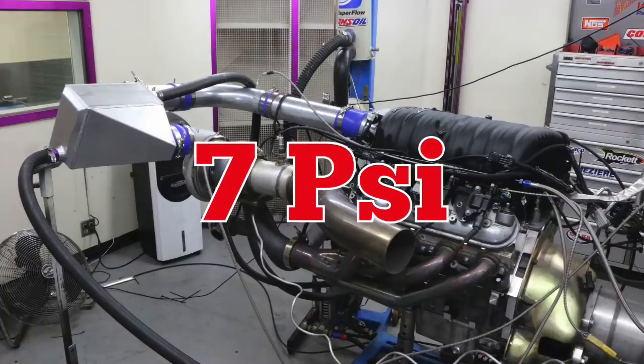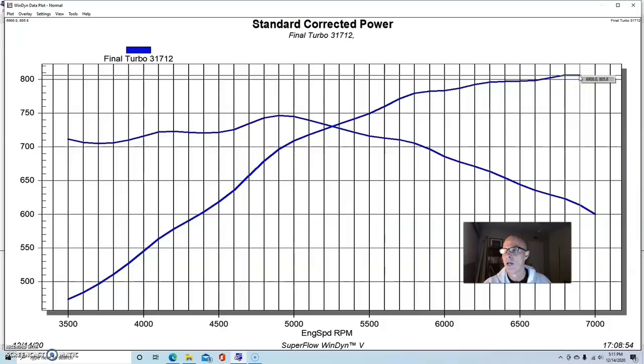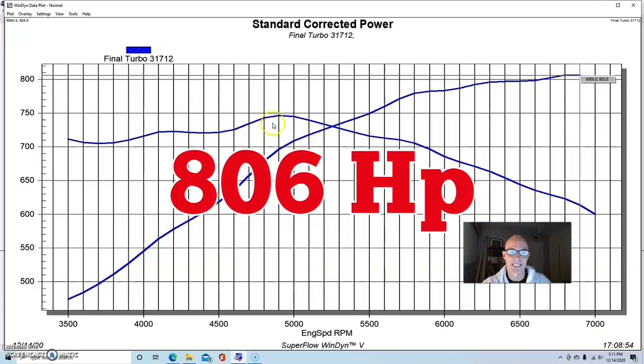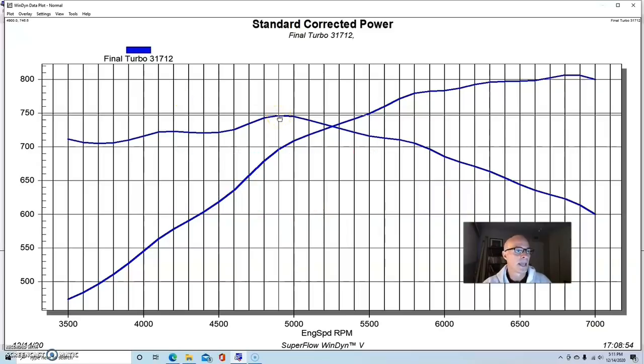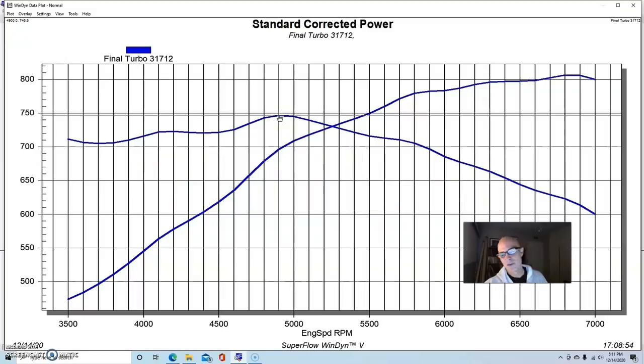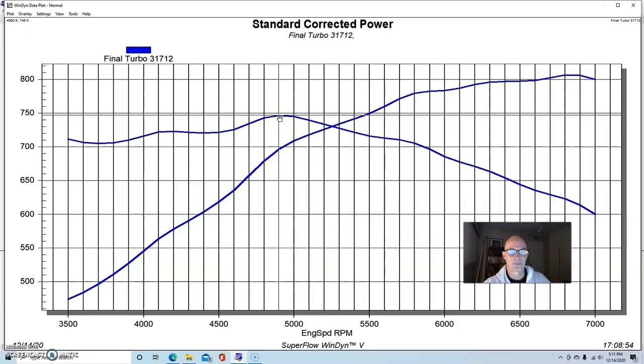This was at about seven pounds, right? 6.9 or so. This turbocharged 317 with the fast intake and the comp cam was 6.9 pounds of boost produced 806 horsepower and 746 foot pounds of torque. So you can see if you have any kind of like six liter cam six liter and you add boost to it, you start making a lot of power pretty quickly. So that's the other takeaway from this. In addition to the comparison that we're doing on the cylinder heads. So that was with the 317 head.